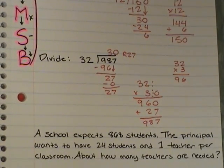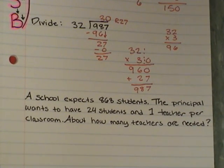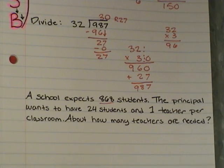And we have done these before, so this is just another review, just to kind of get you thinking about dividing by two-digit numbers, because you have had some of these on your tests. The next one. A school expects 868 students. I'm going to underline that, because that's probably important. The principal wants to have 24 students and one teacher per classroom. About how many teachers are going to be needed for this school.